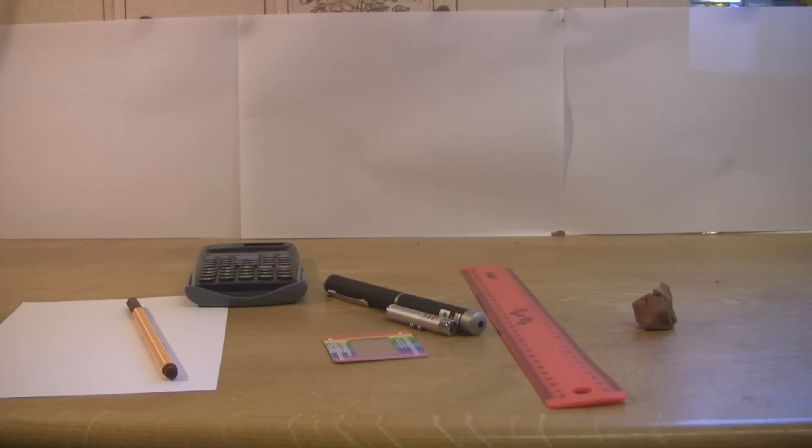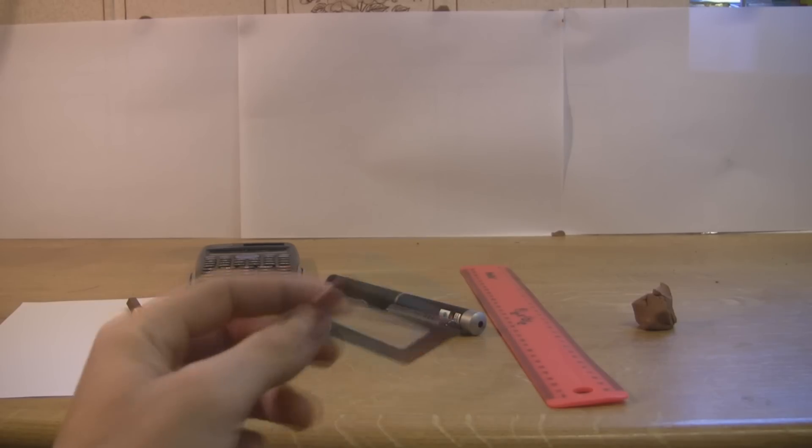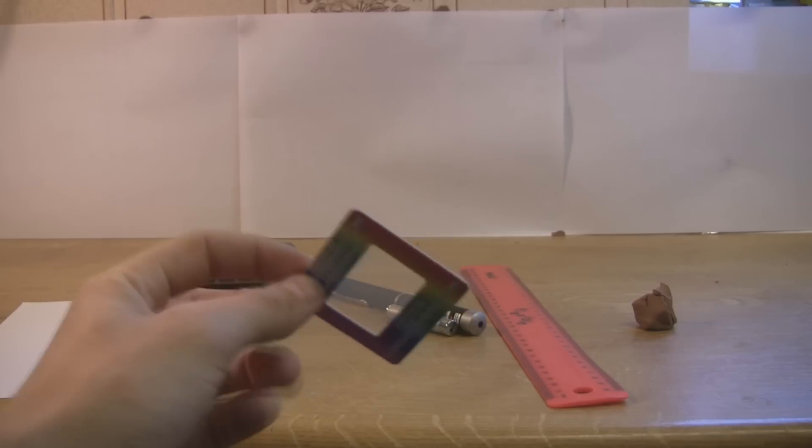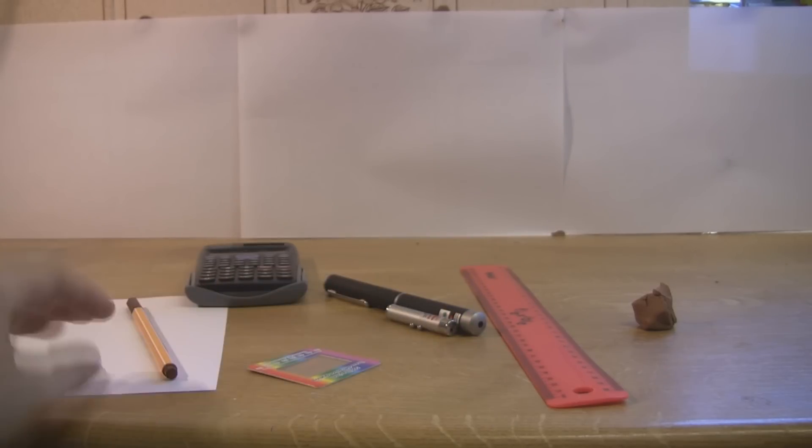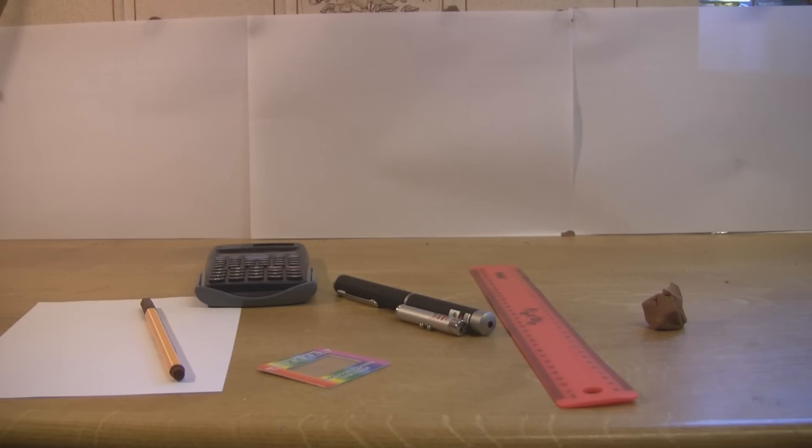What we're going to need for this experiment: we're going to need a calculator, a laser, some plasticine, a ruler, and a diffraction grating. These come in all shapes and sizes. This is just a cheap one, you can get them online for about a fiver. You're going to need some pen and paper and a clear wall to shine the laser on. Let's get started, let's set everything up.